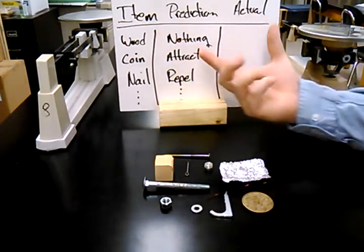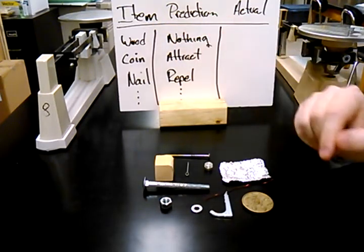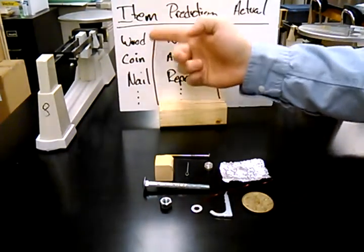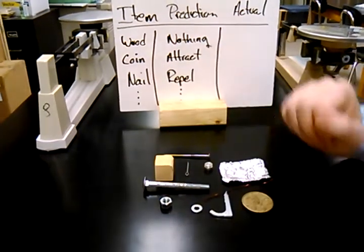What I've done is made a quick data table here where I have the items listed. So I got wood, coin, nail, so on and so forth. We list all the items. And then I made a prediction.